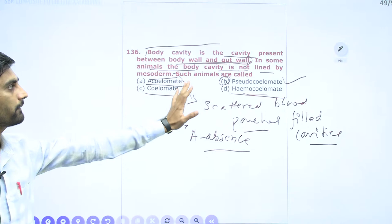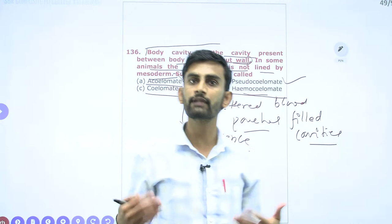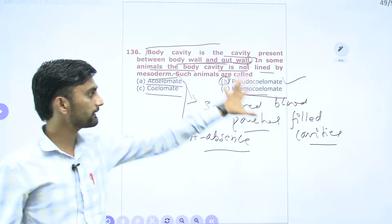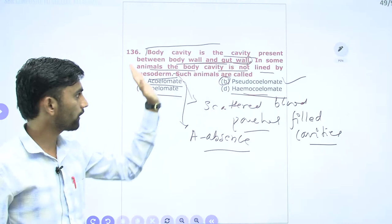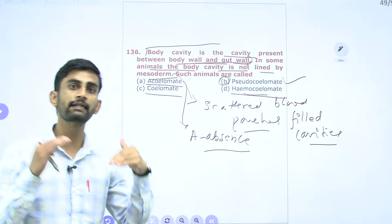For the main NEET examination, remember that pseudocoelom means the coelom is not lined by mesoderm but is present in the form of scattered pouches. That sentence must be completed to arrive at the answer: pseudocoelomate.